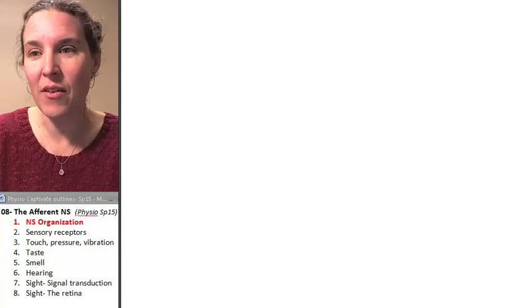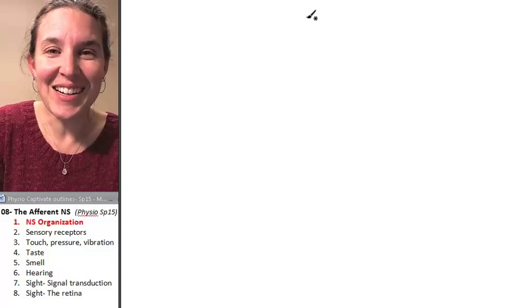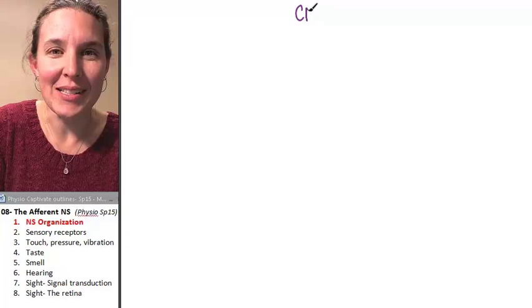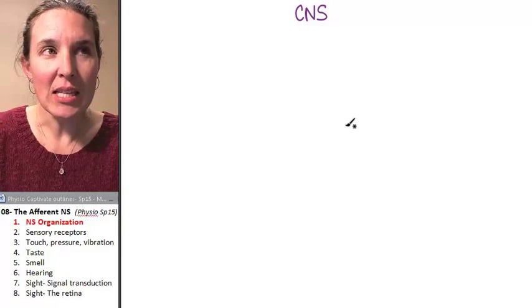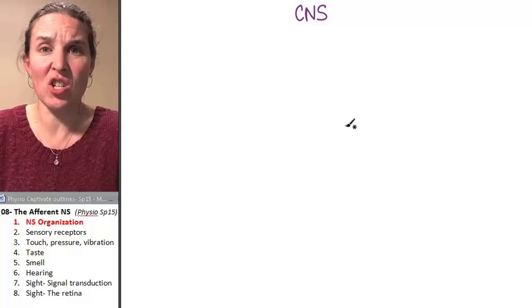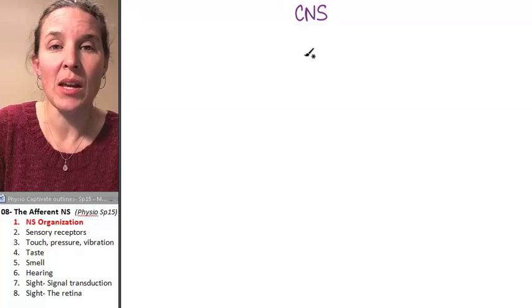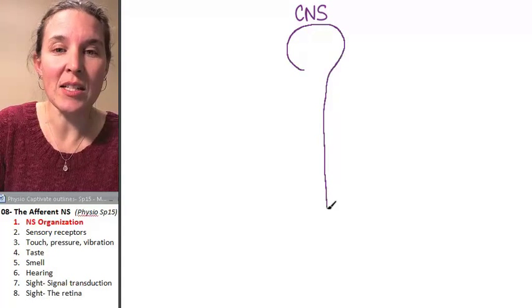So let's draw a picture of the nervous system. And we're going to do this Wendy style. This is my central nervous system. The central nervous system is an anatomical division of the nervous system. And it's anatomical because it includes the brain and the spinal cord.